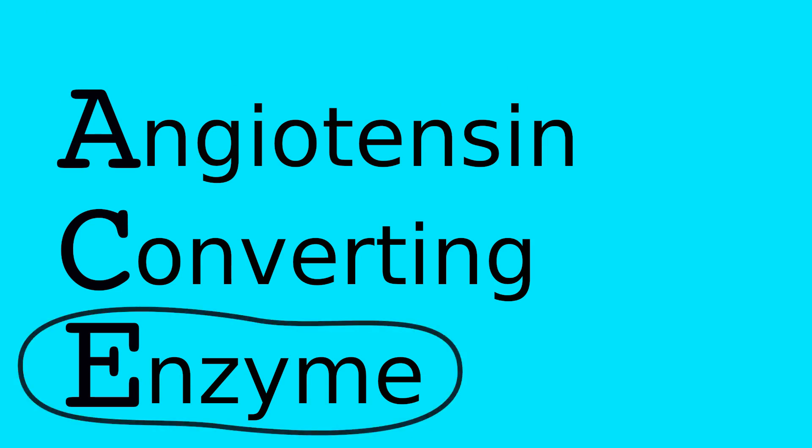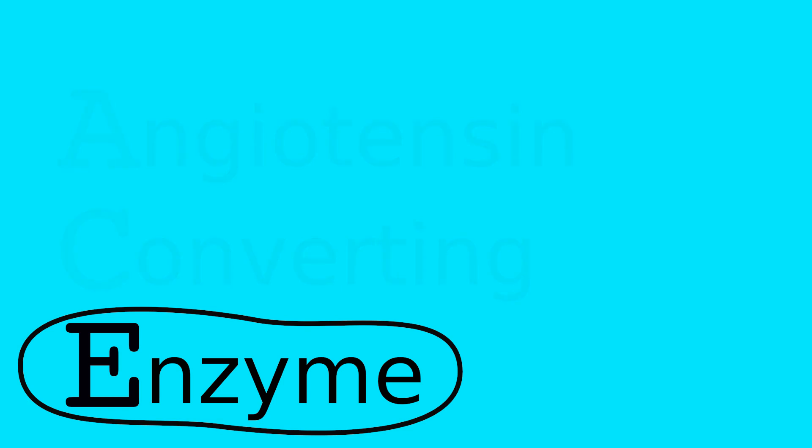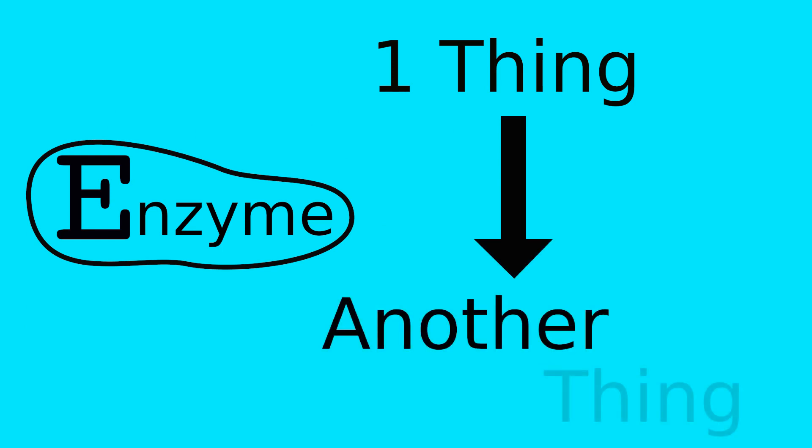Most of us probably don't know what an enzyme is. You can think of an enzyme as something that basically converts one thing into another. Therefore, an angiotensin converting enzyme is something that converts a hormone called angiotensin 1 to angiotensin 2.